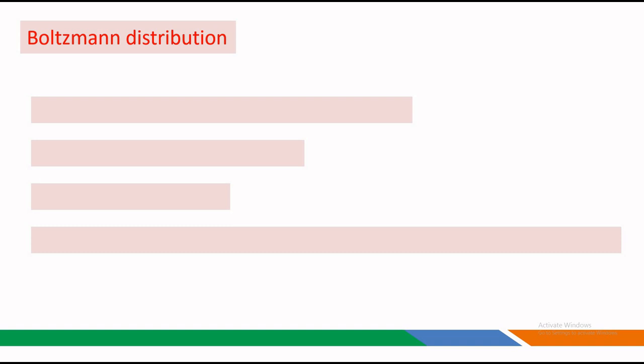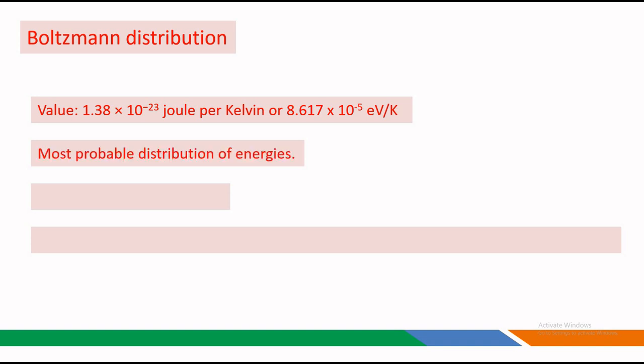The Boltzmann constant is a fundamental constant in physics, denoted Kb, equal to 1.38 × 10⁻²³ joules per kelvin, or expressed in electron volts per kelvin as 8.617 × 10⁻⁵ eV/K. The Boltzmann constant relates the average kinetic energy of particles in a gas to the temperature of the gas.